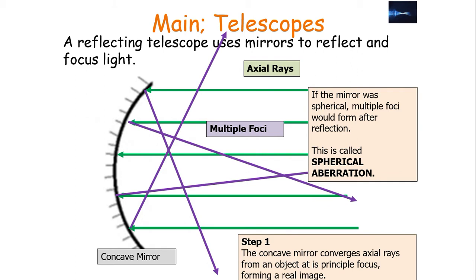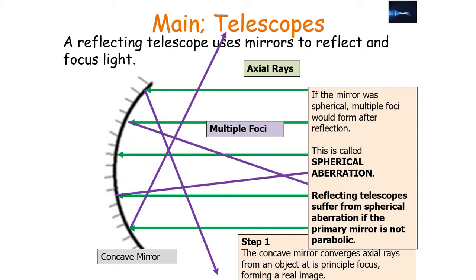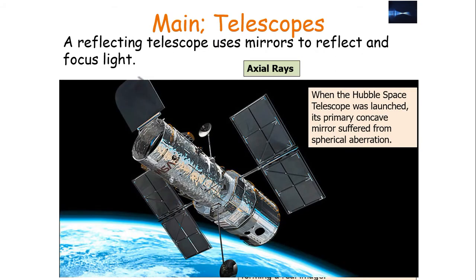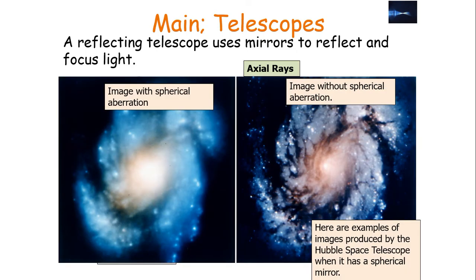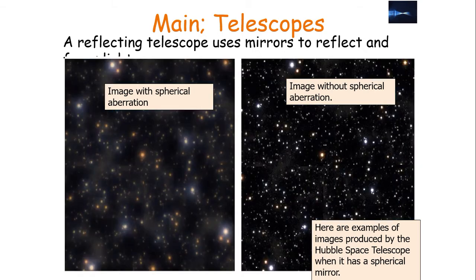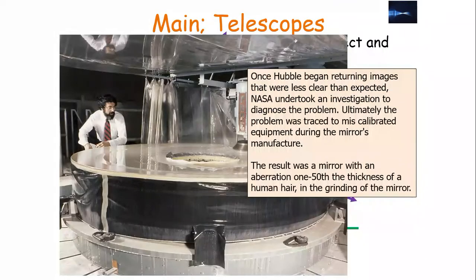This idea is called spherical aberration, where the image will be blurred if multiple foci form after the first reflection. Reflecting telescopes suffer from spherical aberration if the primary mirror is not parabolic. When the Hubble Space Telescope was launched, its primary concave mirror suffered from spherical aberration. The first images produced from the Hubble Space Telescope with its mirror actually showed spherical aberration — producing a much fuzzier and blurred image compared to one without spherical aberration. Here's another example of an image formed which had spherical aberration.